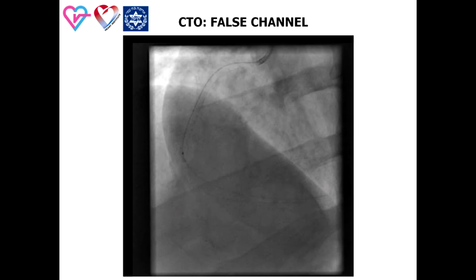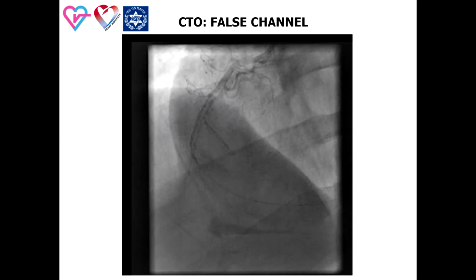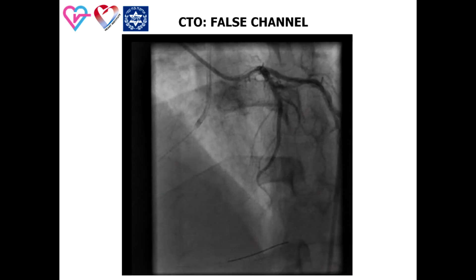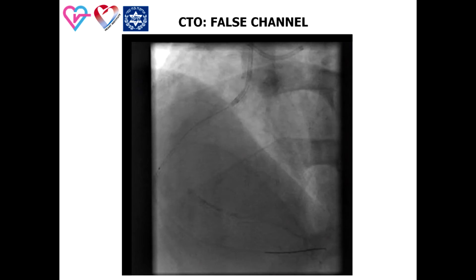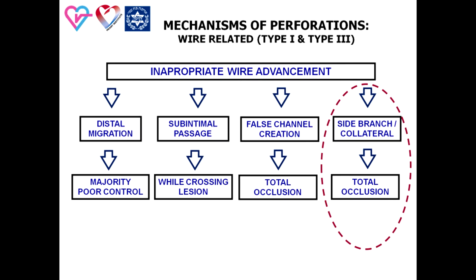At this stage the wire position appeared correct and small balloon predilatation was done. However, subsequent angio demonstrated pericardial spilling — a perforation appearing after device use but related to incorrect wire positioning. Coronary injection to the left coronary system documented the wire position was actually outside the right coronary artery.